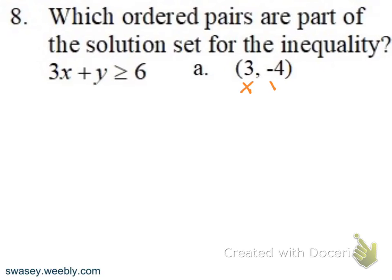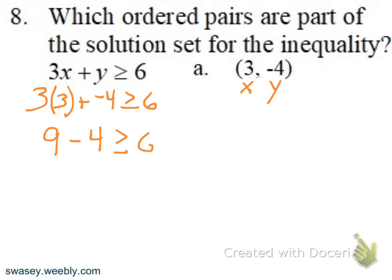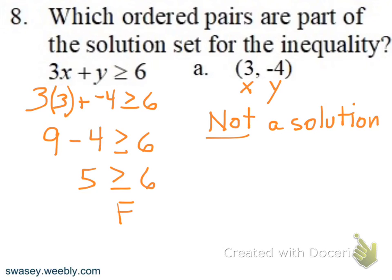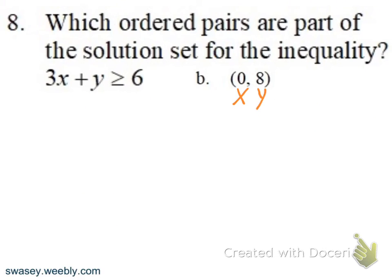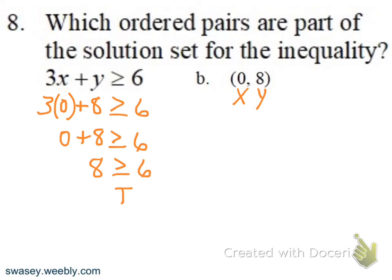For checking solutions, it's like the test point idea — replace x and y with the given values and see if the result is true or false. For part A: 3 times 3 is 9; 9 plus negative 4 gives 5. Is 5 greater than or equal to 6? That's false, so it's not a solution. For part B: x is 0, y is 8. 0 times 3 is 0; 0 plus 8 is 8. Is 8 greater than or equal to 6? True — so that is a solution.